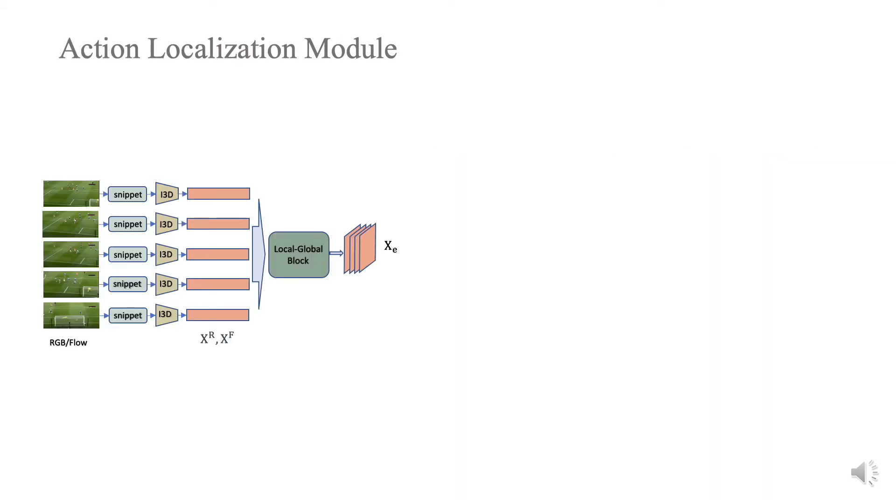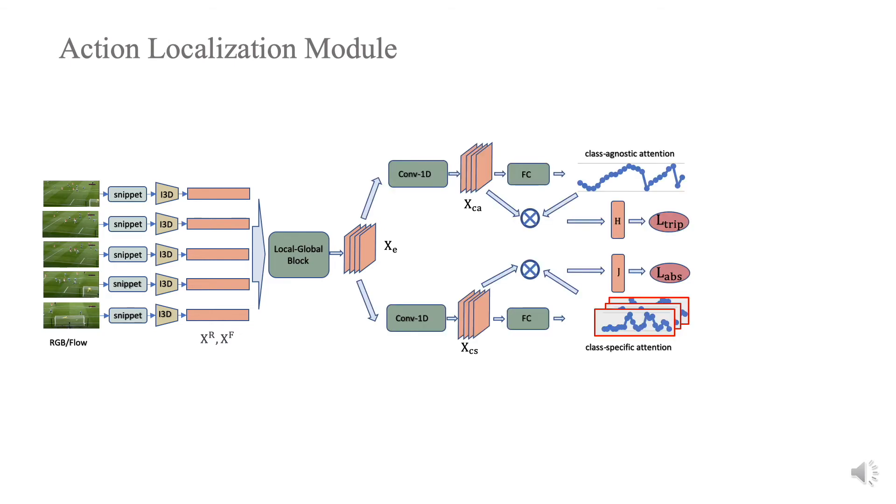Given the feature of an input video, we first use our proposed local-global feature aggregation block to obtain an invariant feature. Then the network breaks into two branches, each composed of a convolution layer and a fully connected layer.